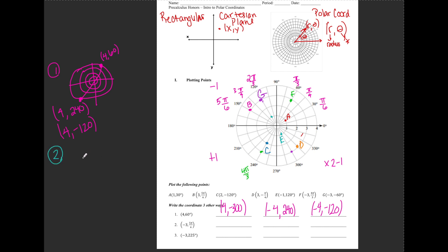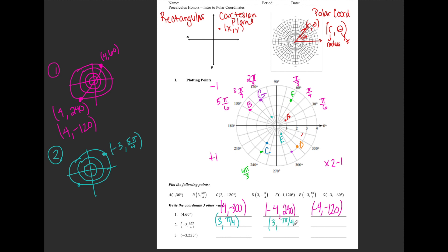For number 2, the point (-3, 5π/4) — since (3, 5π/4) is in the third quadrant, (-3, 5π/4) is straight across in the first quadrant with reference angle π/4, which is also the point (3, π/4). The negative angle to π/4 is 2π - π/4 = 7π/4, so a second way is (3, 7π/4). Negating the radius: 2π - 5π/4 = 3π/4, so the third way is (-3, -3π/4).